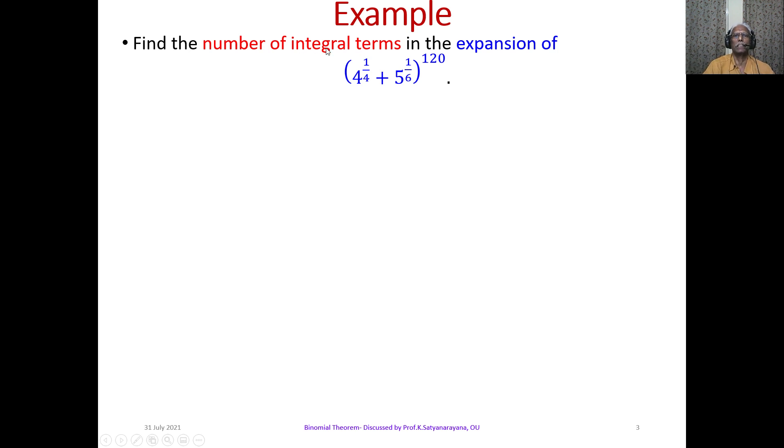Solution: We write 4 as 2^2, then the above will be written as (4^(1/4) + 5^(1/6))^120 is equal to (2^(1/2) + 5^(1/6))^120, because 4 is 2^2, so 2^2 to the power of 1/4 will be 2 to the power of 1/2.